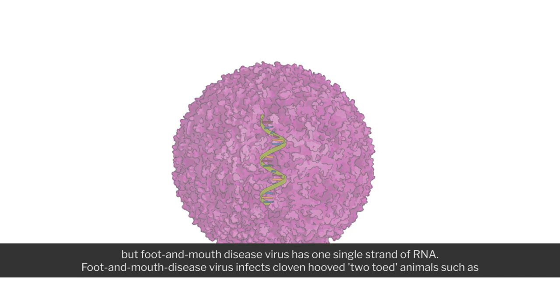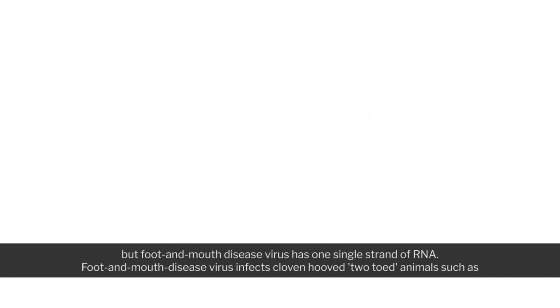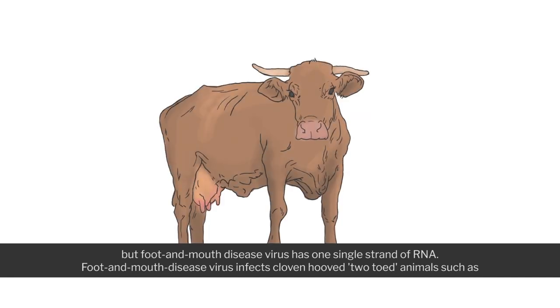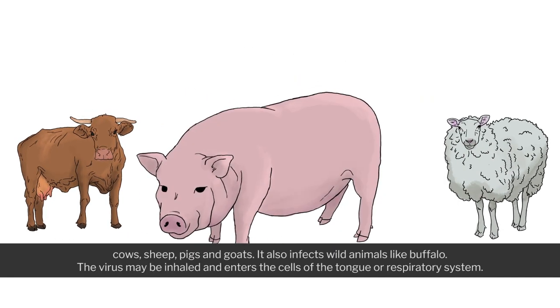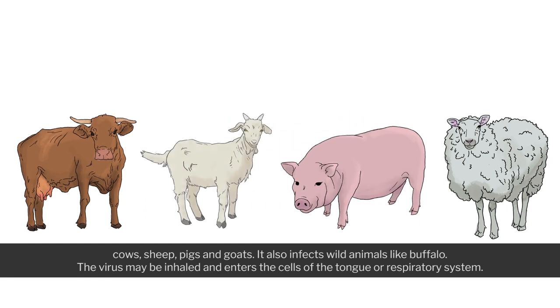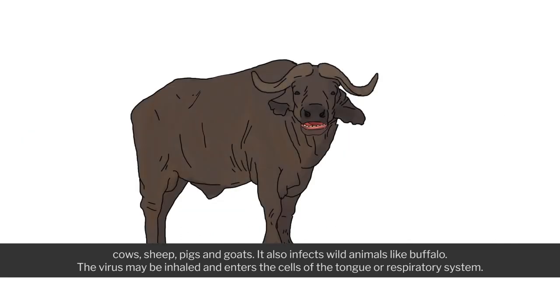Foot and mouth disease virus infects cloven-hooved, two-toed animals, such as cows, sheep, pigs and goats. It also infects wild animals like buffalo.